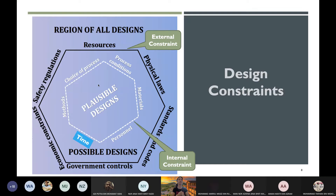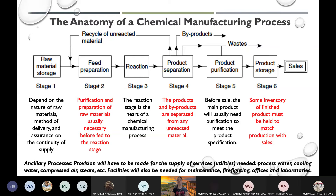So we have external constraints and internal constraints, and you have to discuss how each influences your process selection. Now that you have literature from seniors and the internet, you need to understand what entails a chemical plant. Any chemical process, regardless of method, will go through fundamental stages — what we call the anatomy of a chemical manufacturing process.